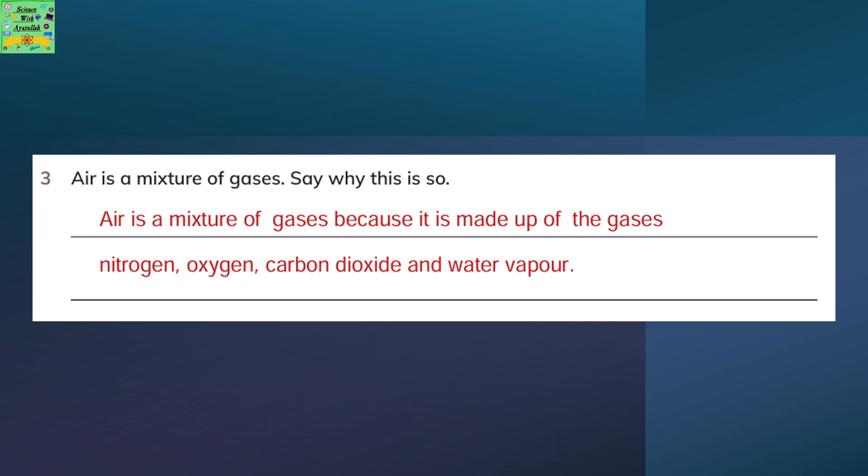Air is a mixture of gases. Say why this is so. Air is a mixture of gases because it is made up of gases like nitrogen, oxygen, carbon dioxide and water vapor.